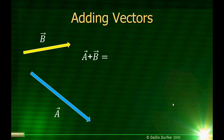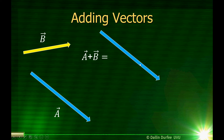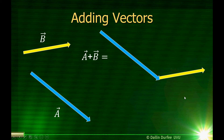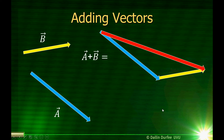We can add vectors together graphically. For example, if I have a vector A represented by this blue arrow and a vector B represented by the yellow arrow, I can add them together simply by taking the first vector and placing the beginning of the second vector at the end of the first vector. Then my result is just from the beginning of the first to the ending of the second. So this red vector here represents A plus B.